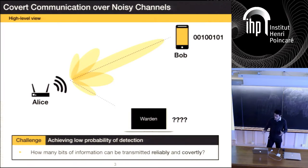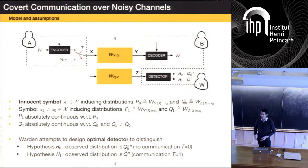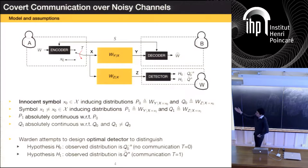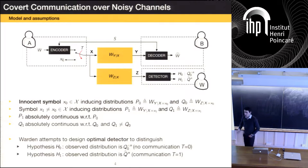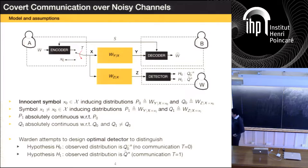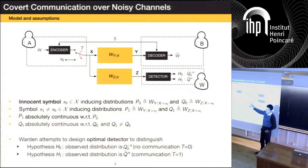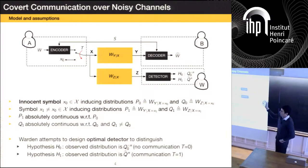Let me put that into terms more familiar to information theorists. We're going to imagine a legitimate transmitter, Alice on the left, who is trying to encode a message W for transmission over a channel — modeled as a discrete memoryless channel for simplicity, though it can extend to the continuous case without too much complication. The message has to be reliably decoded by a receiver, Bob. Unfortunately, when you transmit signals over the channel, these signals are also detected through another discrete memoryless channel by an adversary, which I called Willy here.